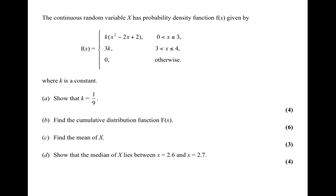That calculation, (47/75)⁴, turns out to be 0.154 to three significant figures. The other question I want to look at is question 4 from the January 2010 paper. This time we're given the probability density function for a continuous random variable: f(x) = k(x² − 2x + 2) when x is between 0 and 3; 3k when x is between 3 and 4; and 0 otherwise, where k is some constant.